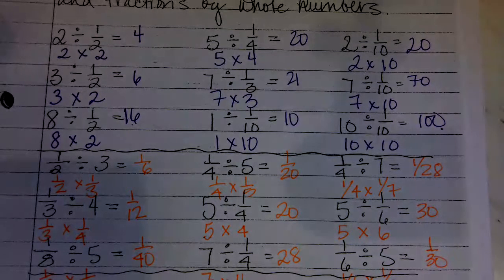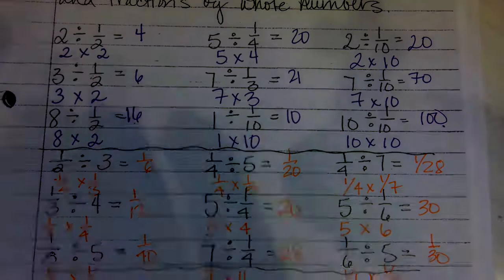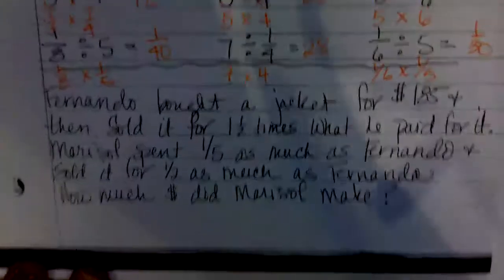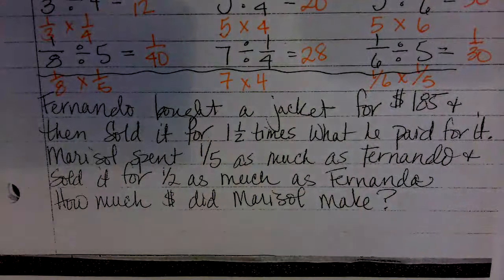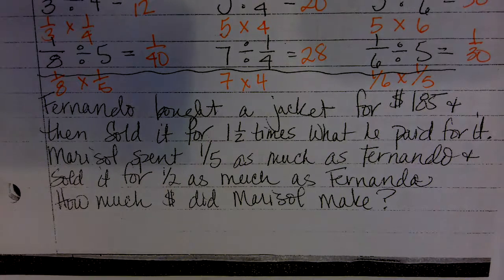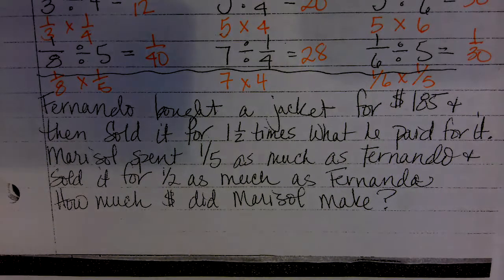How'd you do? This fluency practice is a review of Lessons 25, 26, 27, and 28. Moving on to our application problem: Fernando bought a jacket for $185 and then sold it for one and a half times what he paid for it. Marisol spent one-fifth as much as Fernando and sold it for half as much as Fernando. How much did Marisol make?